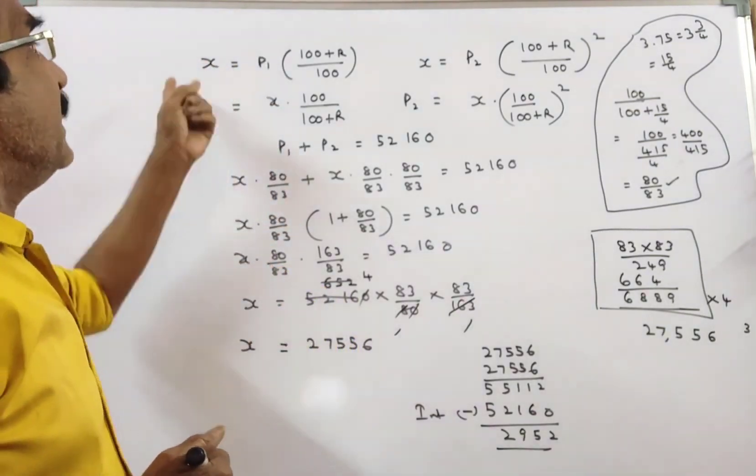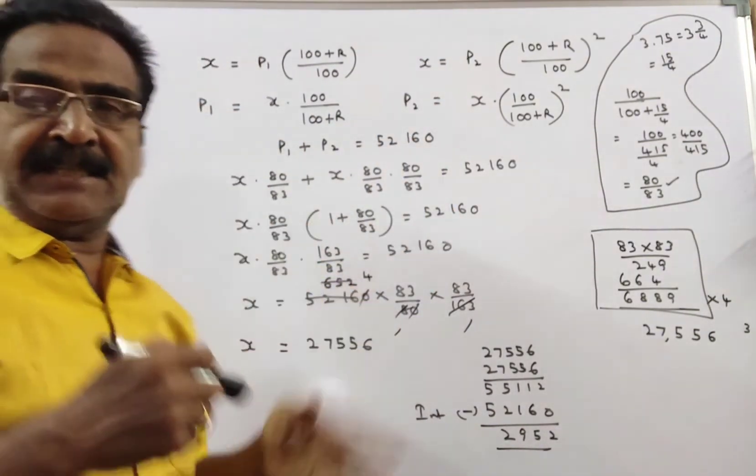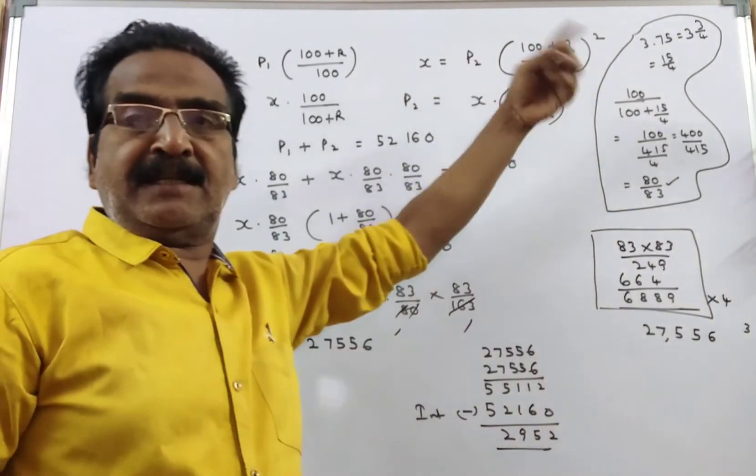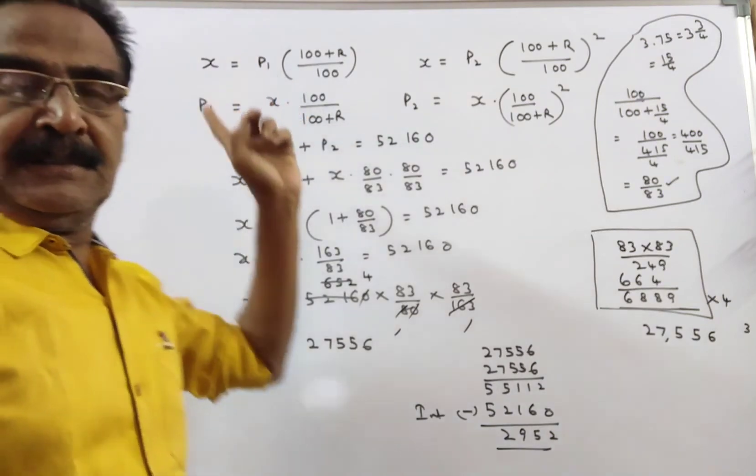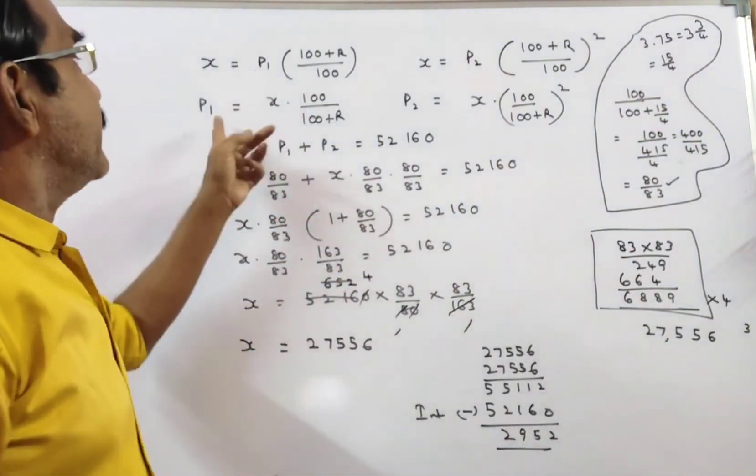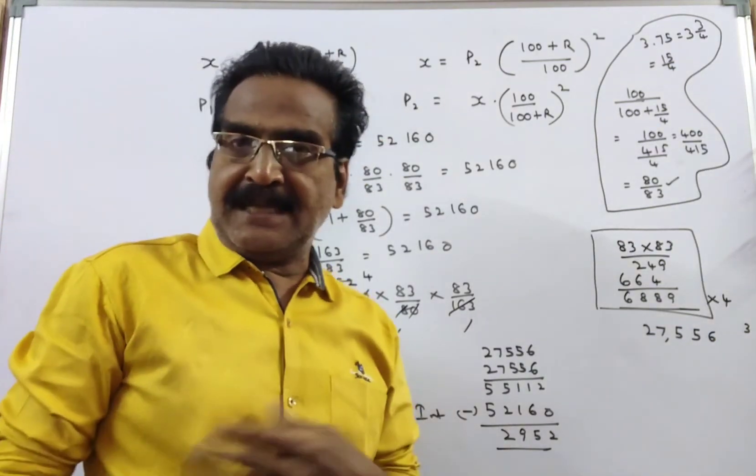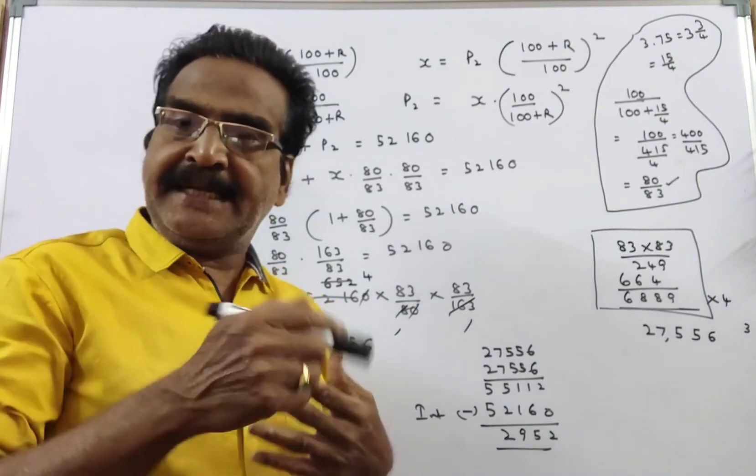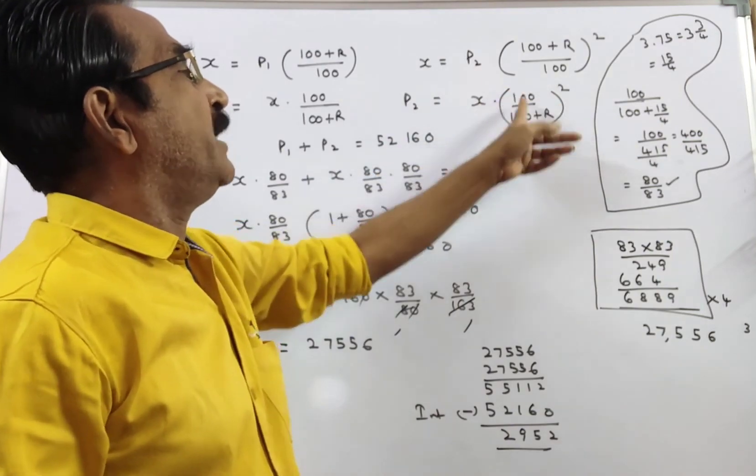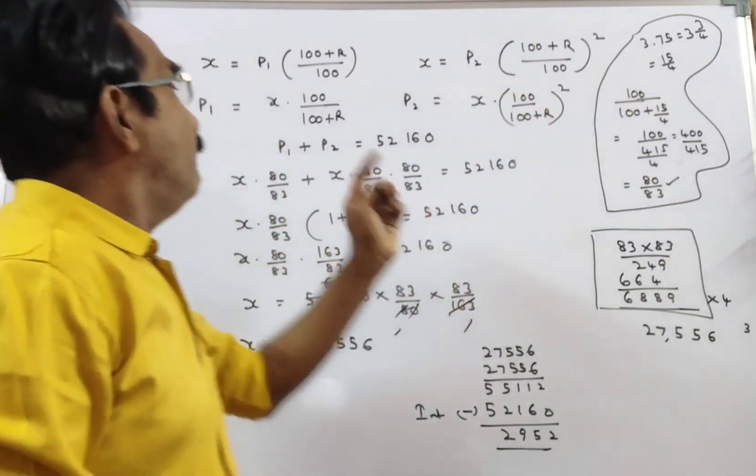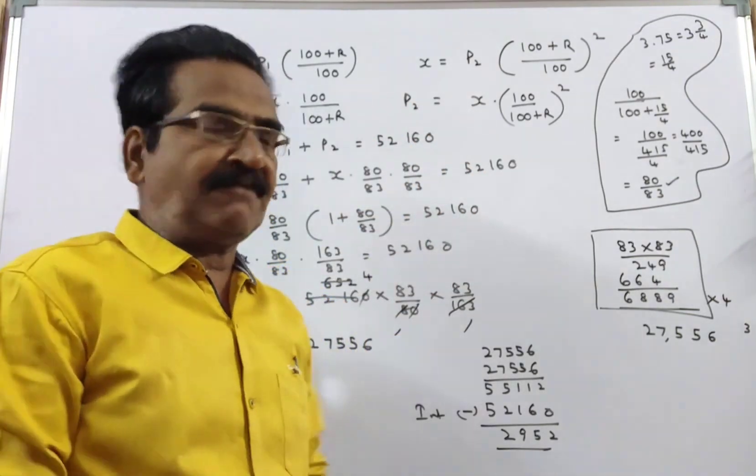Let's say the two equal annual installments are x and x. x is paid at the end of first year and another x is paid at the end of second year. The present worth of the first installment is p1, that is x into 100 by 100 plus r. And the present worth of the second installment paid at the end of second year, p2, is equal to x into 100 by 100 plus r whole square, where p1 plus p2 is equal to 52,160, that is the sum of the present worth.